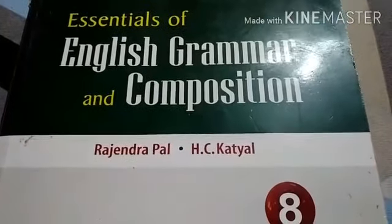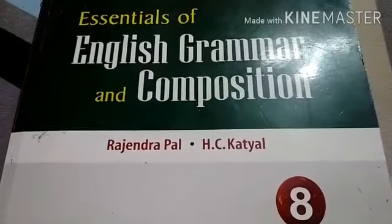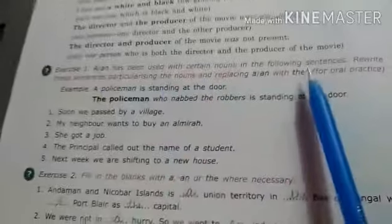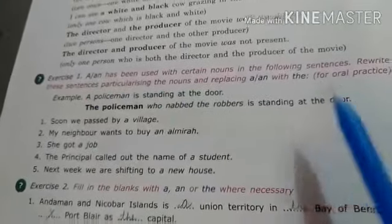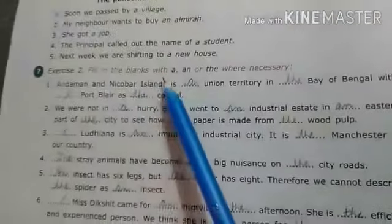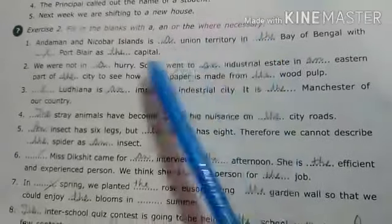Good morning, students of Class 8. We had studied the first chapter on Determiners, and now we are moving to the exercises. First, Exercise 1 is for oral practice — you can solve it by yourself. We'll move to Exercise 2: fill in the blanks with 'a' and 'an', or where necessary. You have to fill in the articles in this fill-in-the-blanks.